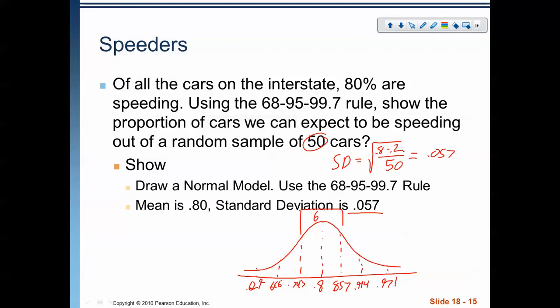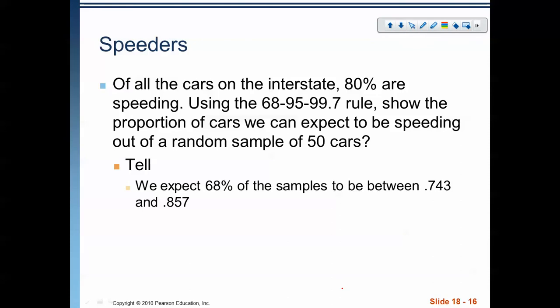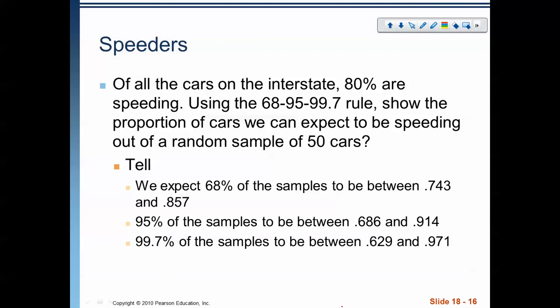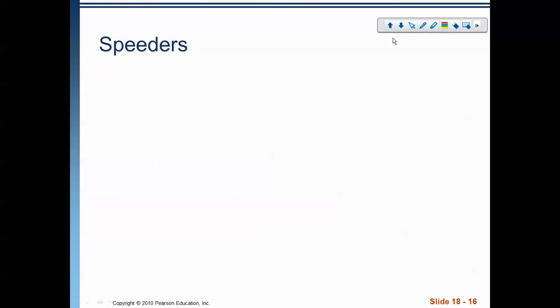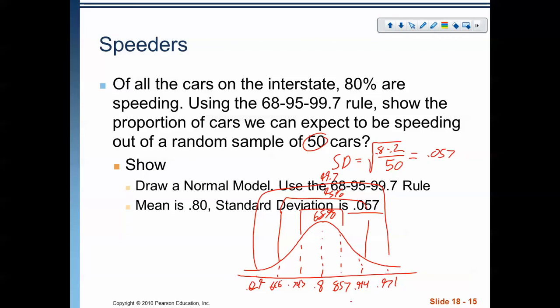Again, remember, 68% within one standard deviation, 95% within two standard deviations, and 99.7% between three standard deviations. And finally, here, we're just reporting it out. We can expect 68% to be between 0.743 and 0.857, the 95% between 0.686 and 0.914, and the 99.7% between 0.629 and 0.971. So, that's what we can expect. Out of 50 cars, if we randomly sample 50 cars, we would expect 68% of those samples taken would be between 0.747 and 0.857. We would expect 95% of the samples taken to be between the 0.686 and 0.914. And 99.7% of the samples taken is 0.629 and 0.971.